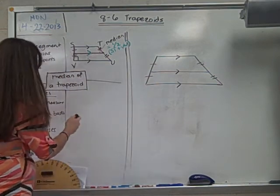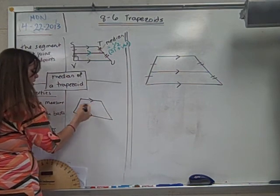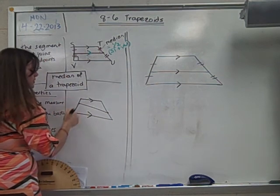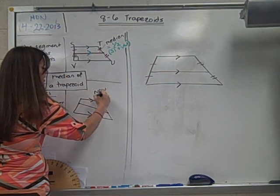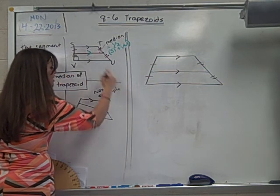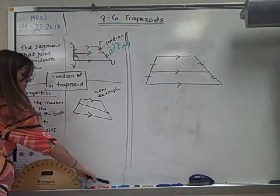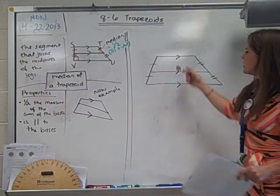What is a non-example of a median of a trapezoid? Here's a trapezoid. If we have a segment that goes through the middle of a trapezoid but does not hit the midpoints, this is our non-example. We've got to know that it hits the midpoints to be a median. All right, let's go over to this picture that I have. Please draw this in your notes.